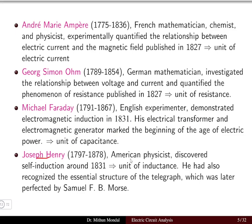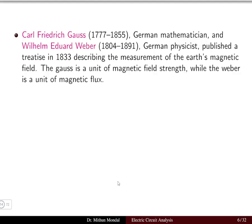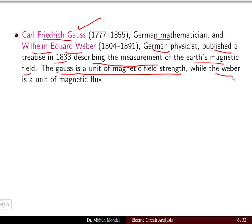Joseph Henry, an American physicist, discovered self-induction around 1831. He also recognized the essential structure of the telegraph, which was later perfected by Samuel F. B. Morse. Karl Friedrich Gauss and Wilhelm Eduard Weber, German mathematician and physicist respectively, published in 1833 describing measurement of the electromagnetic field. Gauss is the unit of magnetic field strength, while Weber is the unit of magnetic flux.